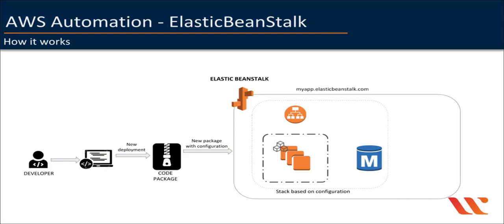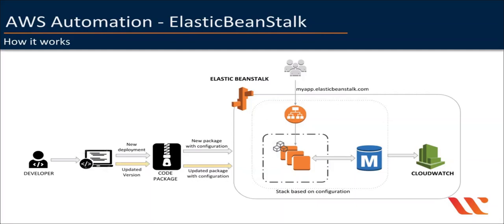It also provides a DNS name for your web application so that users can connect to and start accessing the application within minutes. You can also monitor your environment using CloudWatch metrics within the AWS Elastic Beanstalk console itself, and you can set up alarms to get notified when a specific value exceeds a threshold. After your environment is launched, you can then manage your environment and deploy new versions whenever your application has been enhanced. This can go on as a cycle and you can keep deploying new versions quickly and easily.